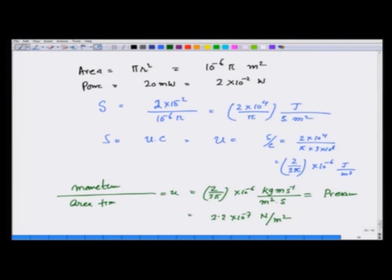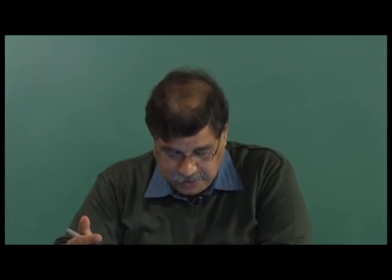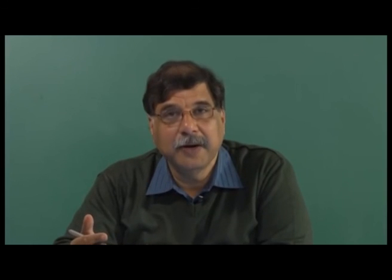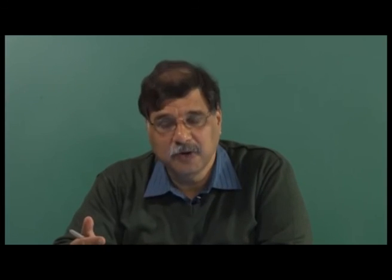So what I have shown you through these two examples is how much is roughly the field associated with radiation that we see in our lives, and also how much is the pressure. You see that fields are quite large, of the order of 10 volts per meter, and the pressure applied by light is very very small, of the order of 10^-6 or 10^-7 Newtons per meter squared.